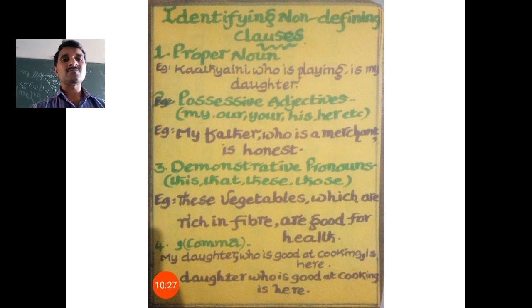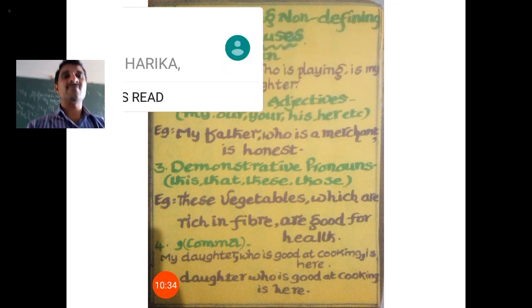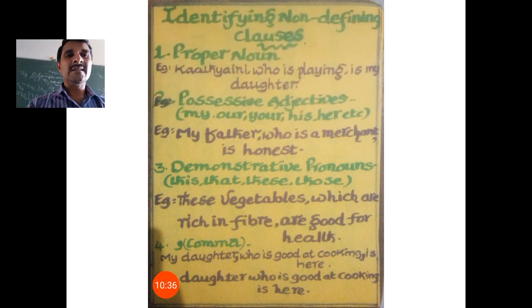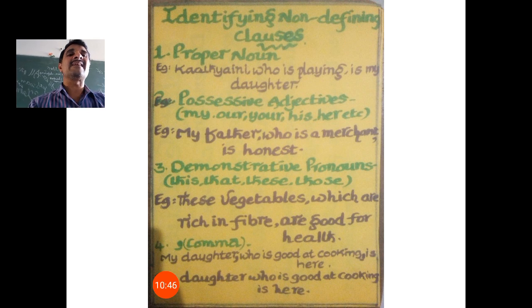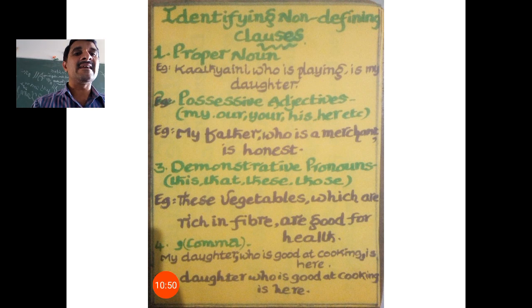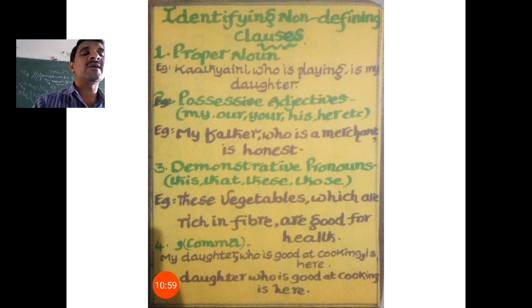And last but not least — the comma. A comma can make a big difference. For example, 'My daughter, who is good at cooking, is here.' 'My daughter' — the identity is crystal clear, already given. 'Who is good at cooking' is redundancy — additional information about 'my daughter.' 'My daughter is here' without the relative clause 'who is good at cooking' is sufficient.